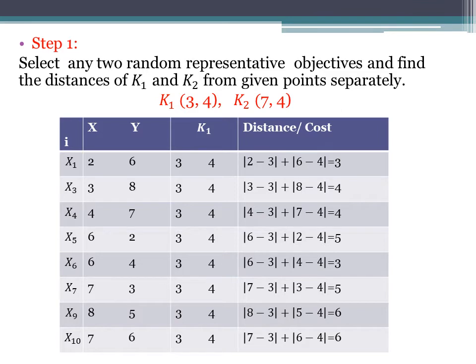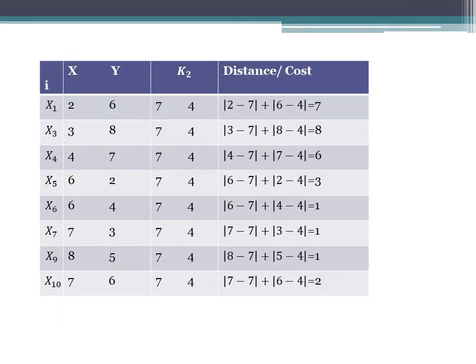For x3: |3 minus 3| + |8 minus 4| you will get 4. For x4: |4 minus 3| + |7 minus 4| you will get 4. You will get all the values one by one using the distance formula. Following similar steps, we now find the distance between k2 and x,y values using the same formula. For x1: |2 minus 7| + |6 minus 4| equals 7. For x3: |3 minus 7| + |8 minus 4|, and so on. Note that x2 and x8 are missing because we chose those values as medoid values.